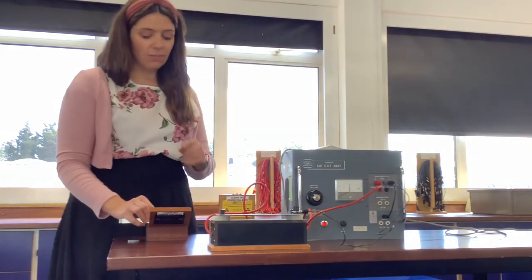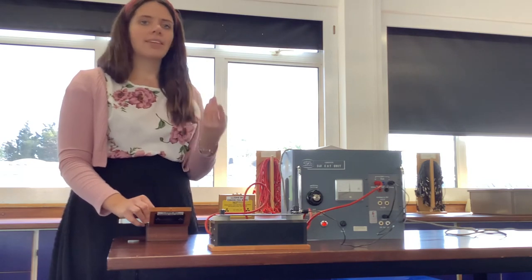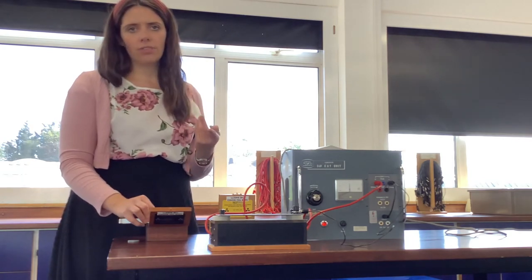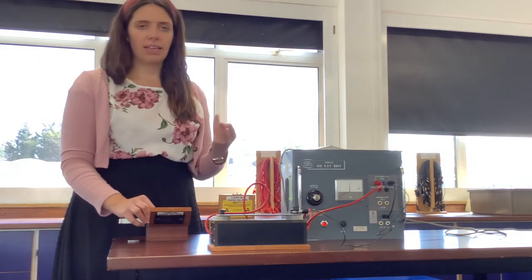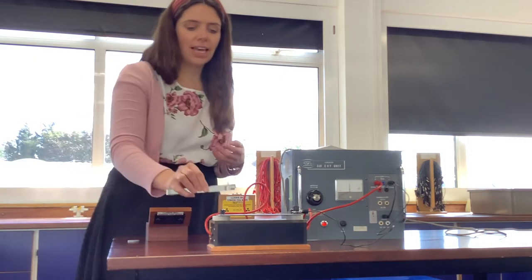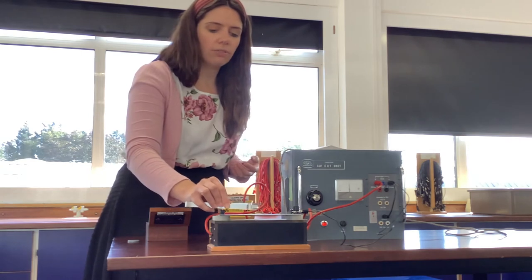And that's because even though this source is giving out alpha and gamma, the gamma isn't ionising enough to make the ions be created and to make the current carry on. So we can see how small the range of alpha is.